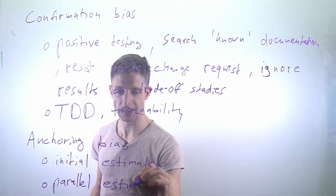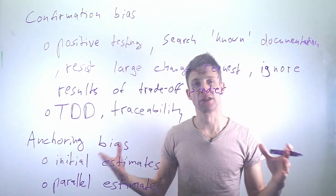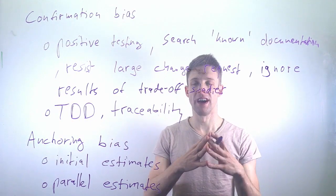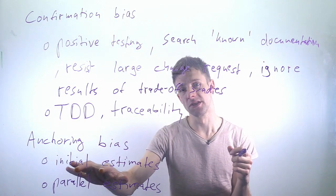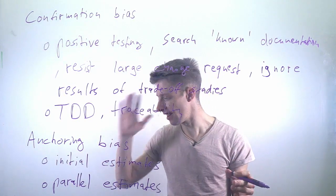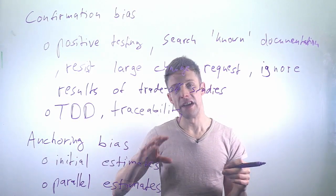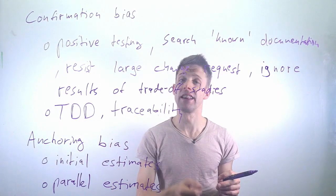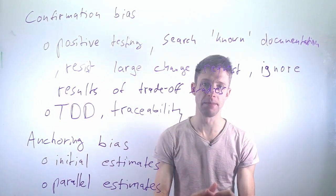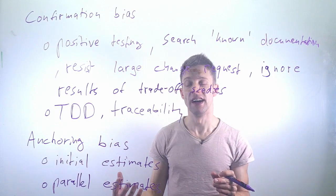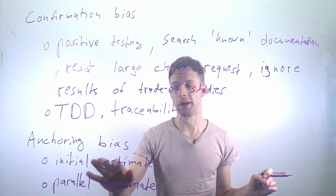Techniques that address this include parallel estimation. In agile development, there's a practice called planning poker where the scrum or XP team simultaneously reveals what they think a task or user story will take. Everyone says at the same time 'I think it will take two weeks' or 'I think it takes one week.' If one person would say 'I think it takes six months' first, all the others would get anchored to those six months. Doing it simultaneously reduces that risk, giving you a broader spectrum to discuss.